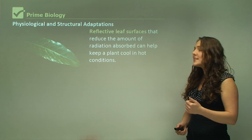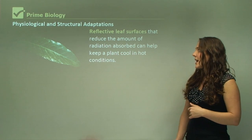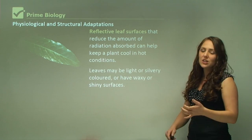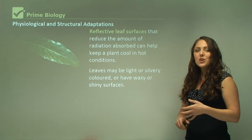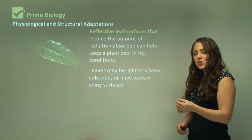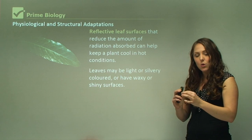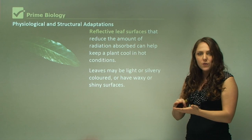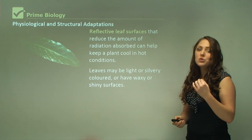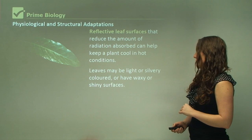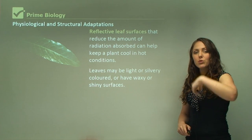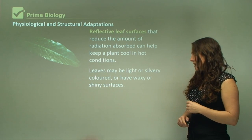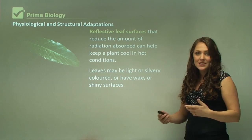A structural adaptation includes reflective leaf surfaces that reduce the amount of radiation absorbed, helping keep a plant cool in hot conditions. This plant here has a shiny, waxy leaf. Go into your environment at home and find your leaves — if it is shiny, waxy, or even thicker, it's more protected from the sun. Leaves might be light in color to reflect light, deep in color to absorb light, or silvery colored with a waxy or shiny surface to protect itself in its environment.